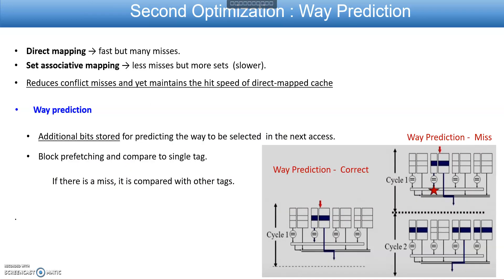The second optimization technique is way prediction, where the goal is also to reduce the hit time. In a direct-mapped cache the response is fast but there may be conflict misses; in a set-associative cache there are fewer misses but it may be slower. The idea is to get the benefits of both by predicting the way in a set — reducing conflict misses while maintaining the hit speed of a direct-mapped cache.